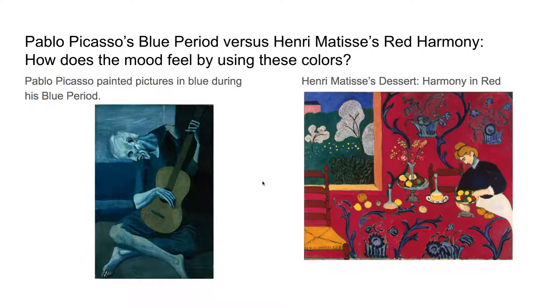Pablo Picasso and Henry Matisse are famous artists of the past. Here we have Pablo Picasso's Blue Period versus Henry Matisse's Red Harmony. How does the mood feel by using these colors? As you can see, both artists have the figure looking down.